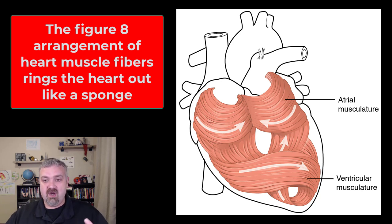And the reason that's important is because the heart basically rings itself out like a sponge and then relaxes. So when it beats, it rings itself out like a sponge, which is a much more efficient way of pumping the blood out of the heart. And then when it relaxes and kind of uncoils, that sucks blood into it.